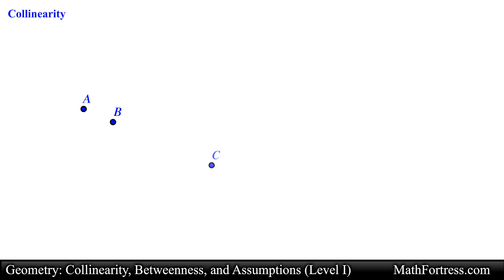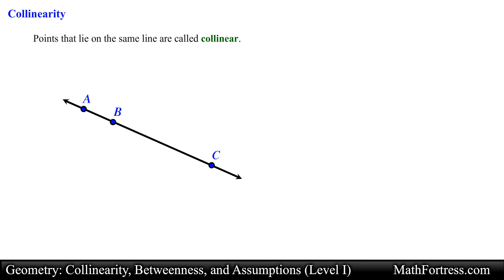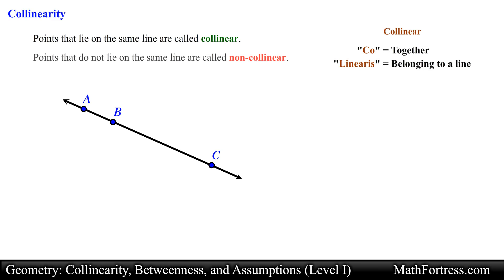It is often useful to know that a group of points lie in the same line. Points that lie on the same line are called collinear — the word 'co' is Latin for 'together' and 'linearis' means 'belonging to a line.' Points that do not lie on the same line are called non-collinear.